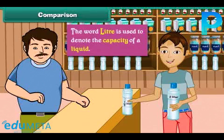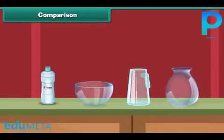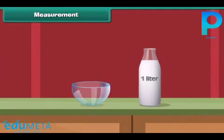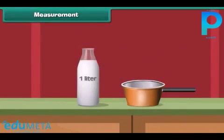We will now pour water from this bottle into a vessel. We have seen that one liter of water does not fill this vessel, which means this vessel holds more than one liter of water. Similarly, pouring water into other vessels shows they also hold more than one liter. When we pour milk from a one-liter bottle into a bowl, milk remains in the bottle, meaning this bowl holds less than one liter of milk. Similarly, this pan holds less than one liter of milk.